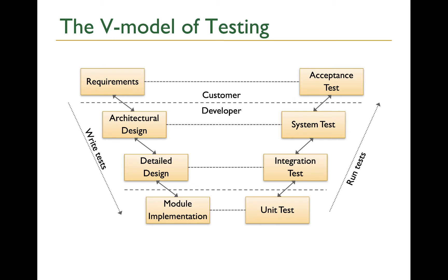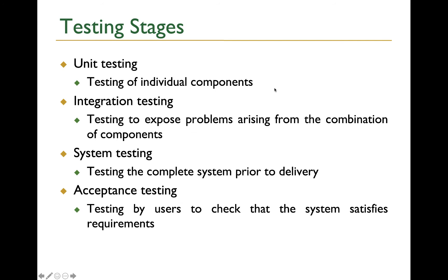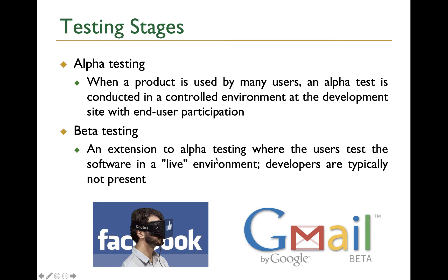For example, for a webpage: how is the performance, how is the latency — can most users open this page very quickly, within 500 milliseconds? And eventually, once we deliver to users, they will perform acceptance testing to make sure that the final software product is what they need. So these are different types of testing, and as a developer, we're mostly focused on the first two — unit testing and integration testing.